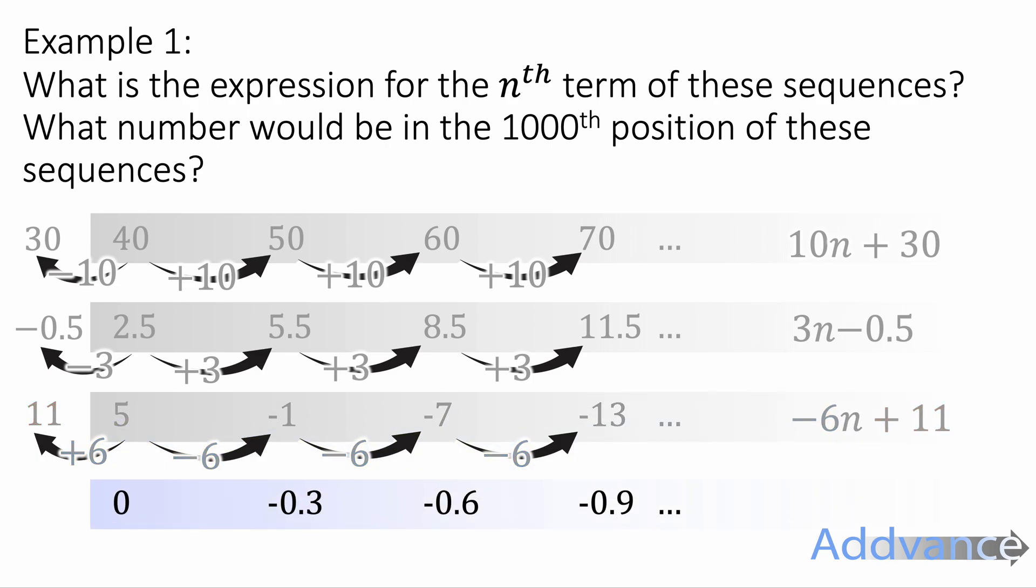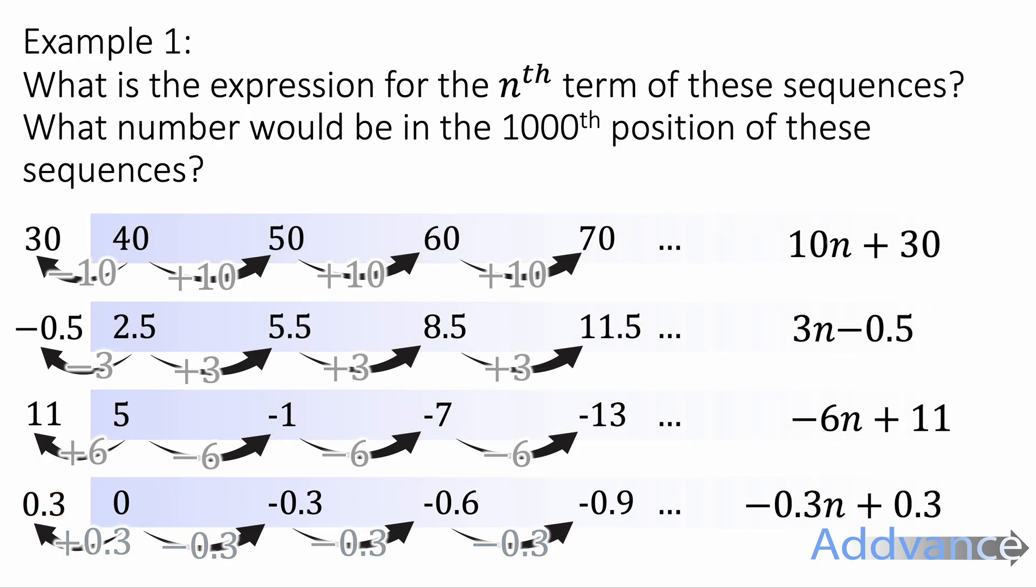Final one, 0, -0.3, -0.6, -0.9. This is going down by minus 0.3 each time. And if you go backwards, you'll get the previous term is 0.3. So we add 0.3 on the end. And that is the final answer for all of them.